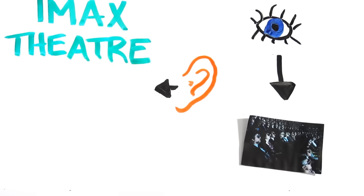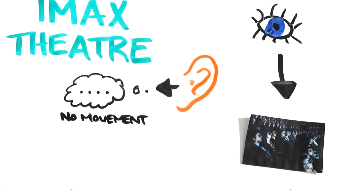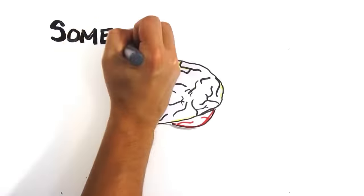Conversely, in the IMAX theater, your eyes see a lot of motion while your ear is experiencing very little movement at all. This mismatch of signals tells the brain something's wrong.